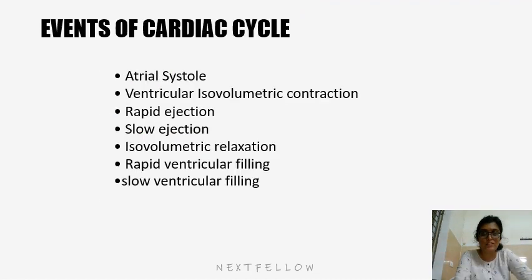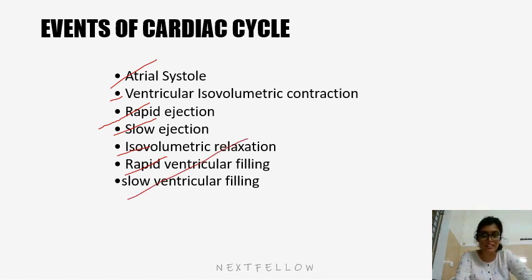The events in the cardiac cycle are: atrial systole, ventricular isovolumetric contraction, stage of rapid ejection, stage of slow ejection, isovolumetric relaxation, rapid ventricular filling, and slow ventricular filling.